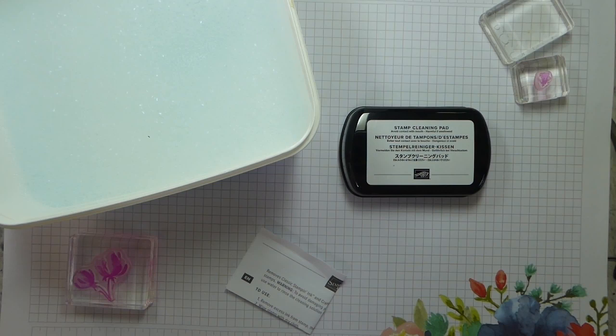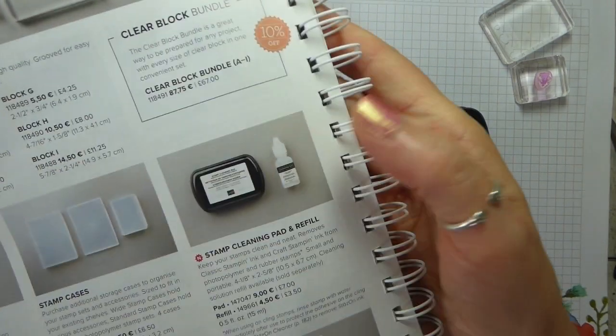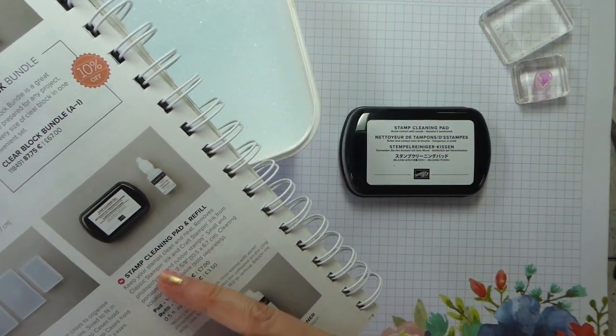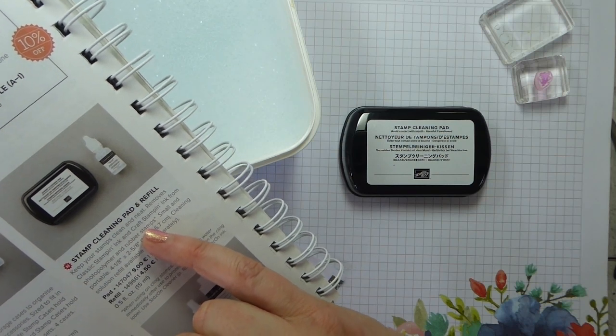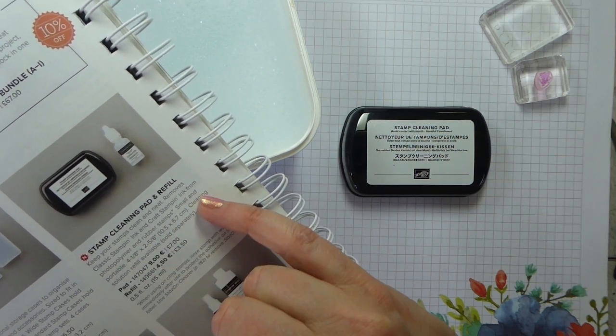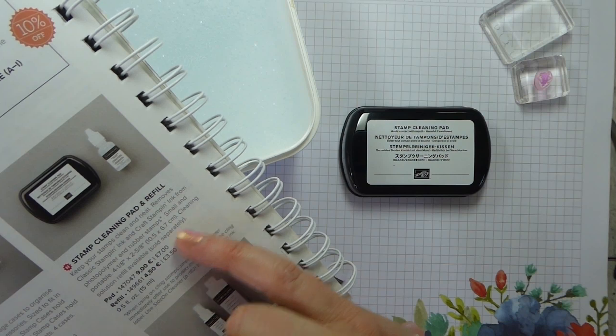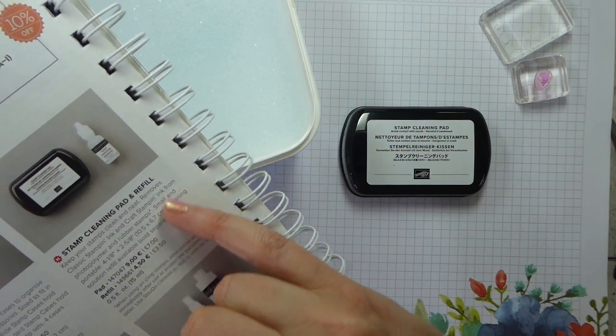Stamp cleaning supply is 182. Okay. So, it's on page 182. And it says, keep your stamps clean and neat, removes classic stamping ink and craft stamping ink from photopolymer and rubber stamps. Cleaning solution refill available and sold separately.